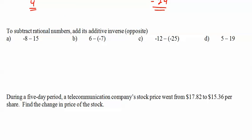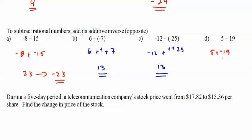To subtract rational numbers, add its additive inverse is really what we're doing. So this is really negative 8 plus negative 15. And I am a big fan of changing everything to pluses, not all the time, but when it gets confusing. 8 and 15 is 23. Since they're both negative, negative 23. 6 plus negative negative 7. Negatives cancel out. We get 13. Negative 12 plus negative negative 25. Negatives cancel out. Subtract. 13. Bigger number is positive. We're done. 5 plus negative 19. They're opposite. Subtract. 19 minus 5 is 14. Bigger one is negative. We're done.